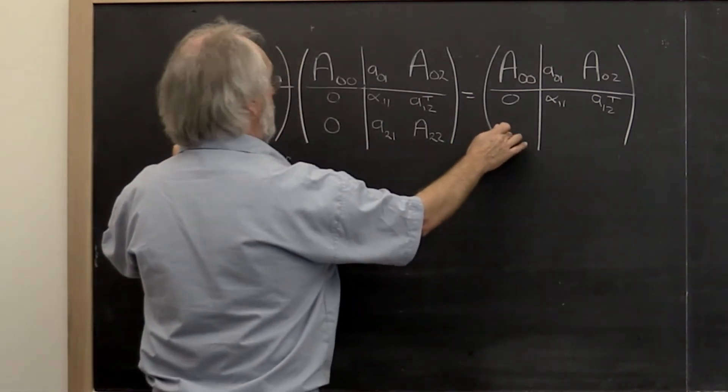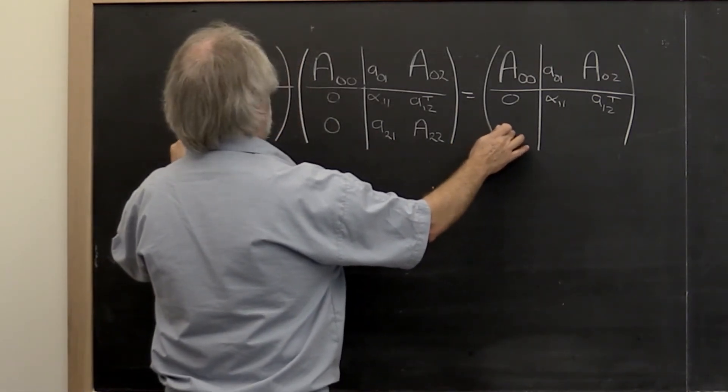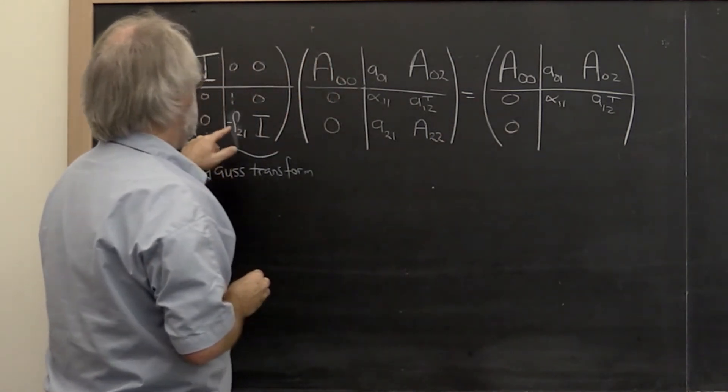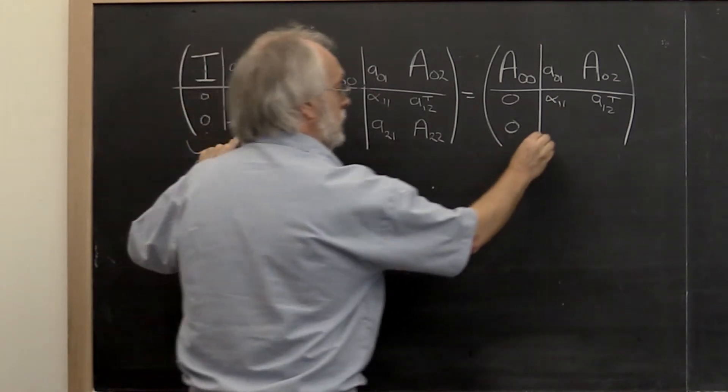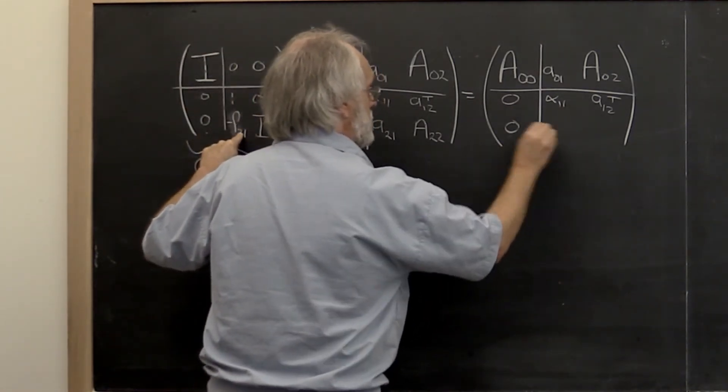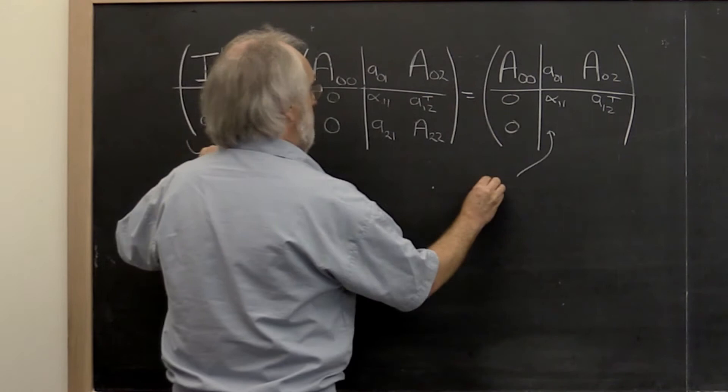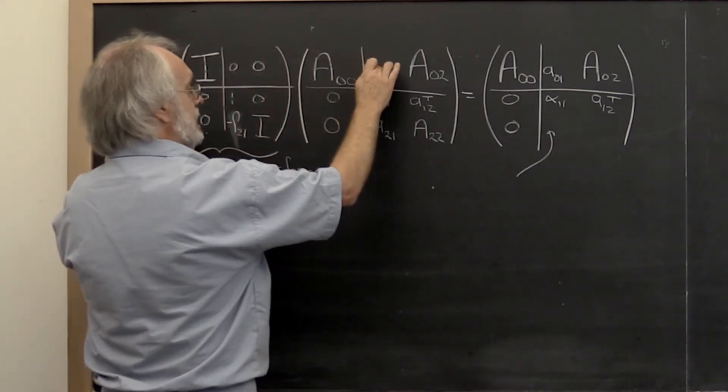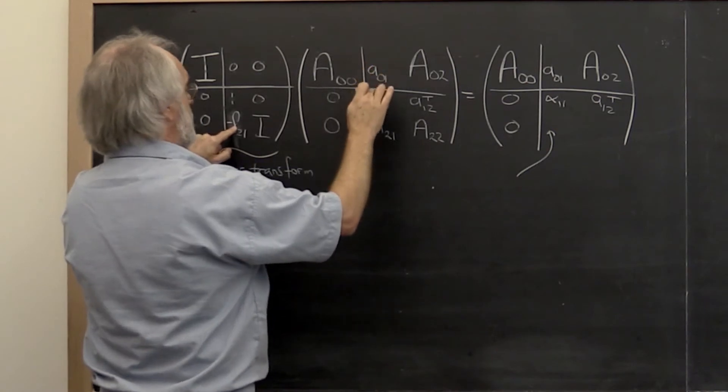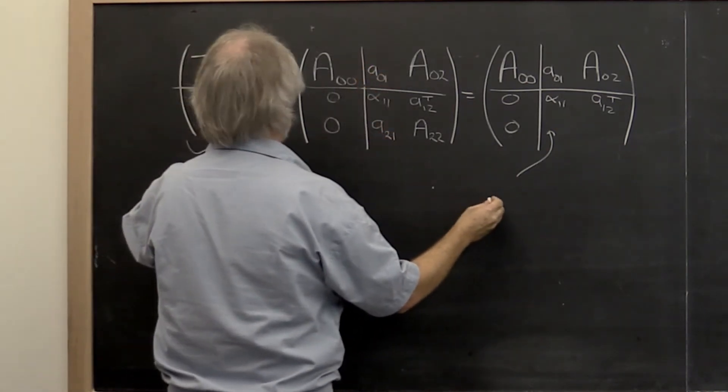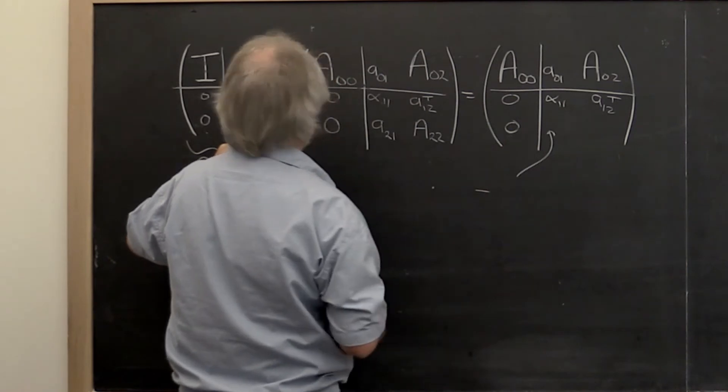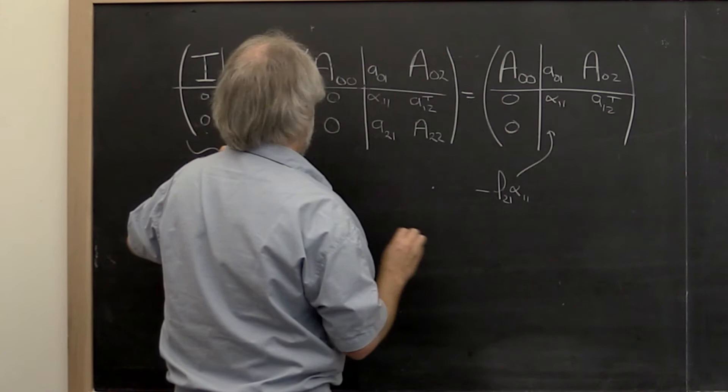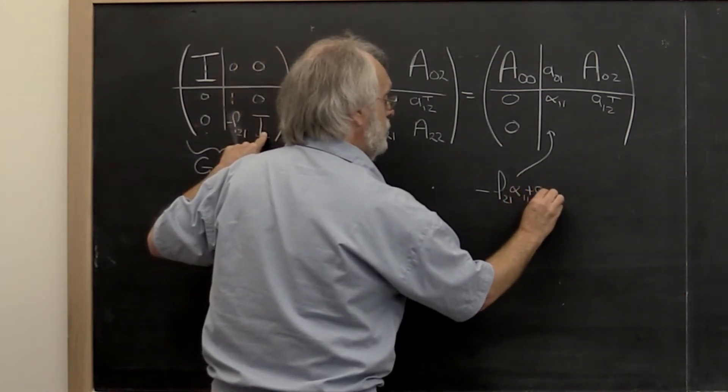Now this right here is this times that plus this times that plus this times that. So we retain the zeros there. And now this right here becomes, let's see, this times L21 times alpha 1 1 plus A21.